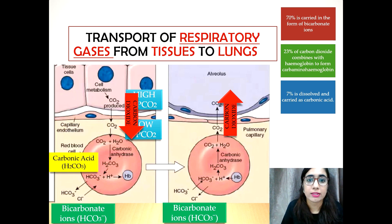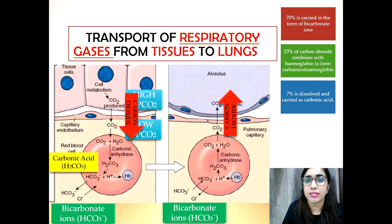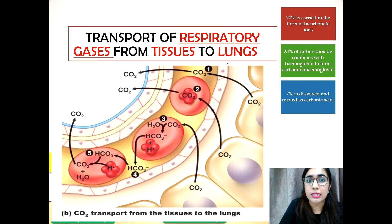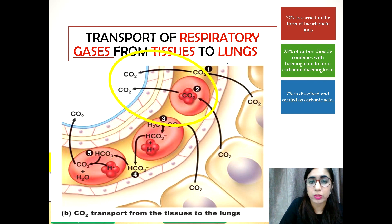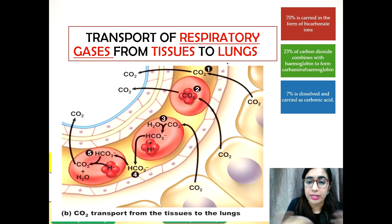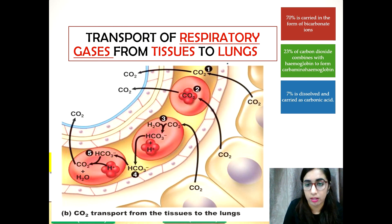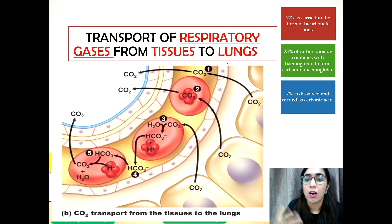Carbon dioxide can also be transported in the form of carbaminohemoglobin. Some of the carbon dioxide binds with the amino group in the hemoglobin within the red blood cells to form carbaminohemoglobin. It is then transported by blood circulation to the lungs to be eliminated. In the blood capillaries of the alveoli, carbaminohemoglobin breaks down and releases carbon dioxide molecules that diffuse into the alveoli to be eliminated through exhalation — similar to how oxygen combined with hemoglobin to form oxyhemoglobin.